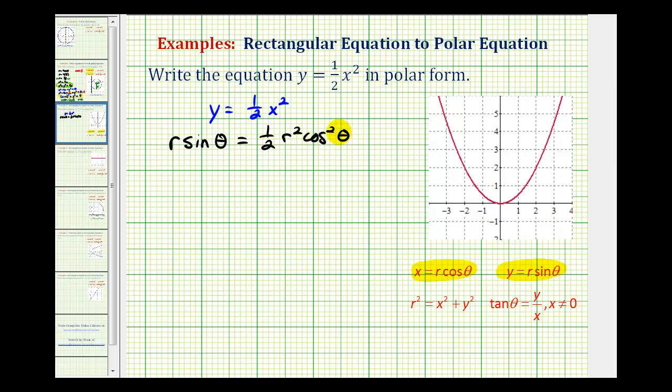And now we need to solve this equation for r. Let's start by multiplying both sides of the equation by two to eliminate the fraction. So this two and this two would simplify to one. So now we have two r sine theta equals r squared cosine squared theta.